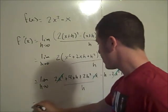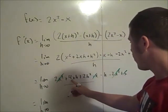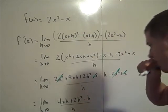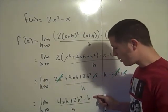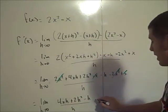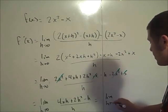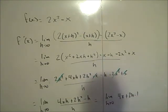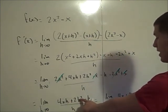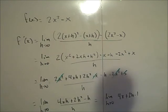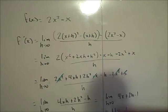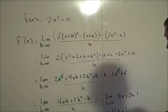We continue with the limit as h goes to 0 of 4xh plus 2h squared minus h, all over h. The h in the denominator cancels with a factor of h in the numerator — we factor h out of each term — giving the limit as h goes to 0 of 4x plus 2h minus 1. Now we can substitute 0 in for h, and we find f prime equals 4x minus 1. So the derivative of 2x squared minus x is 4x minus 1.